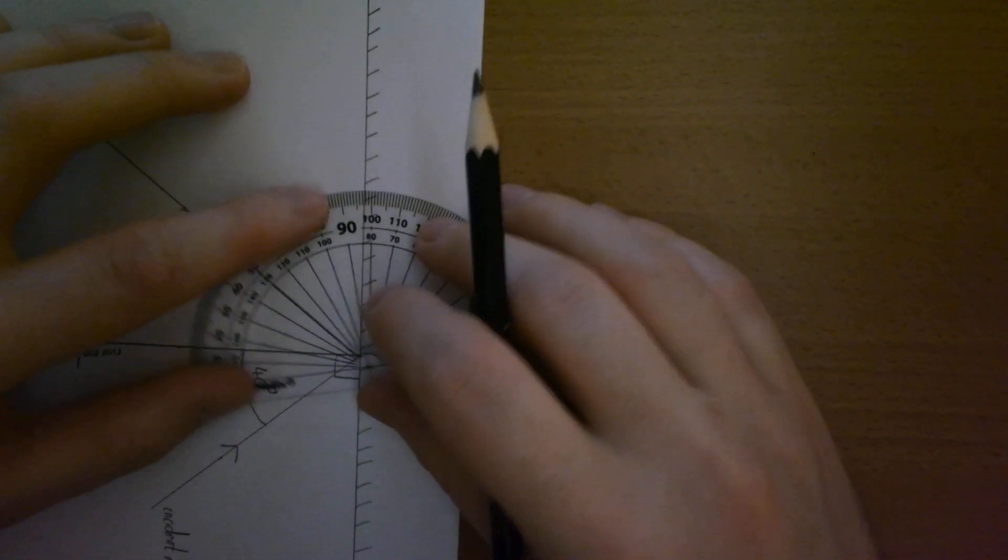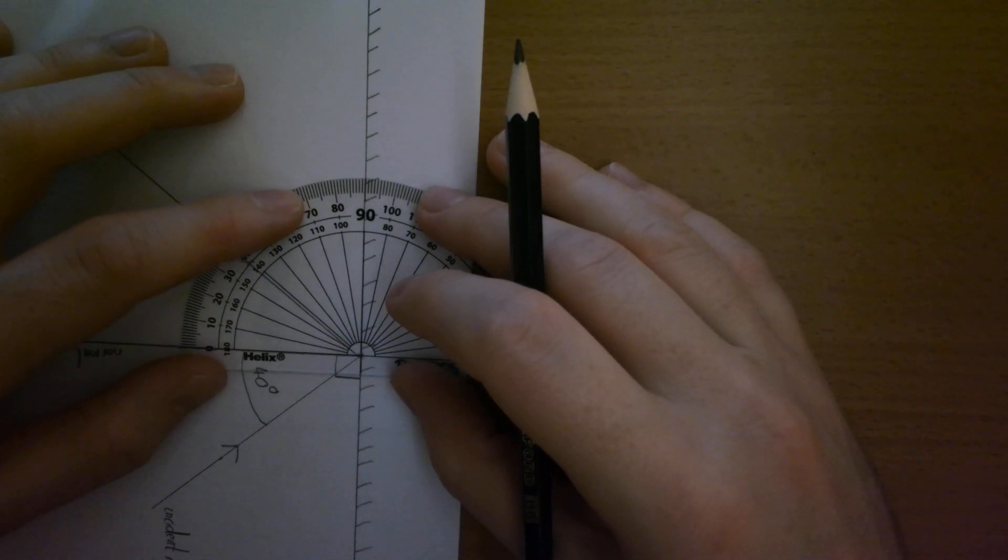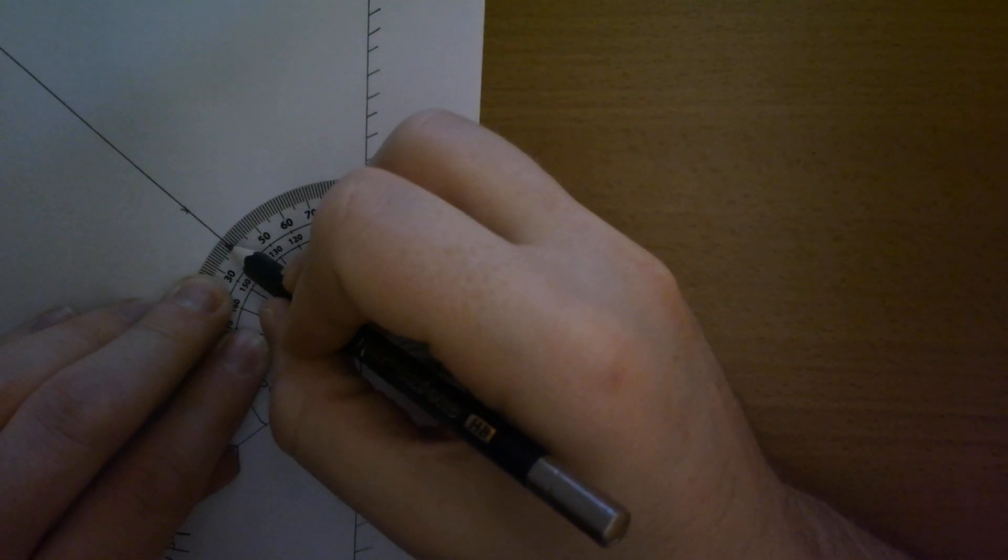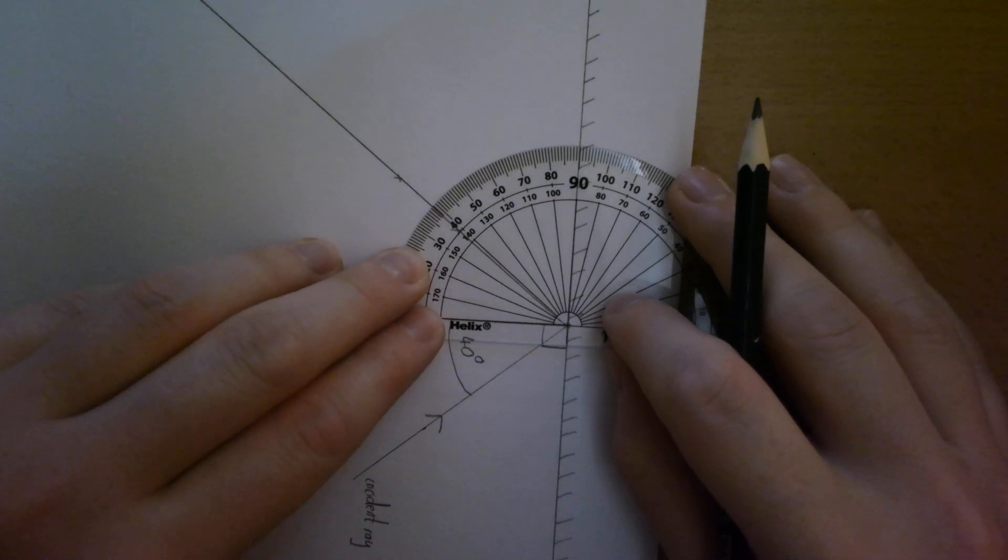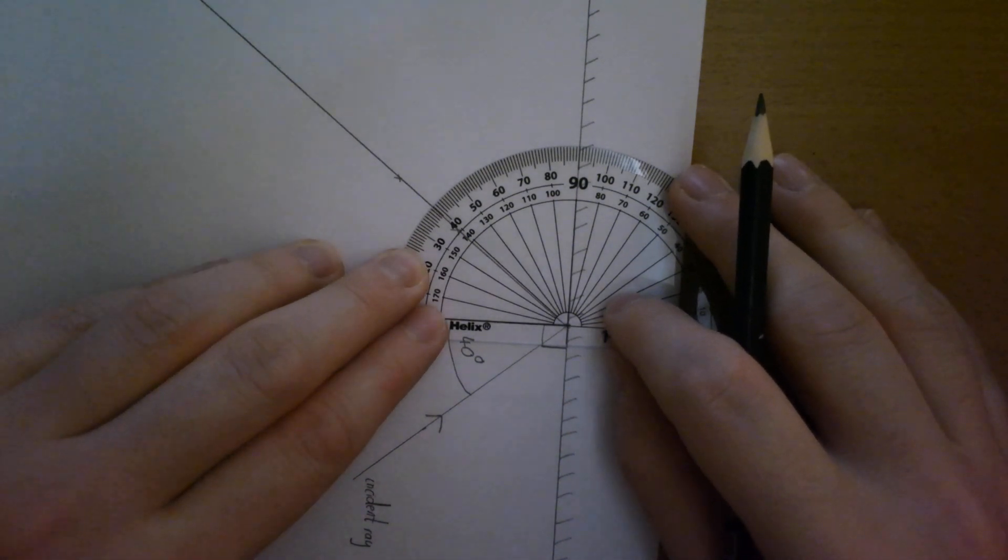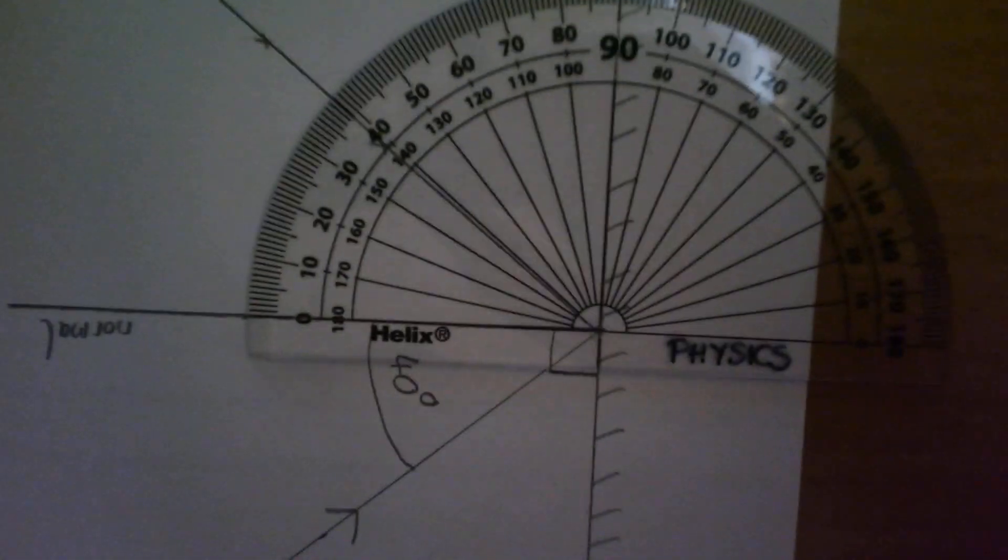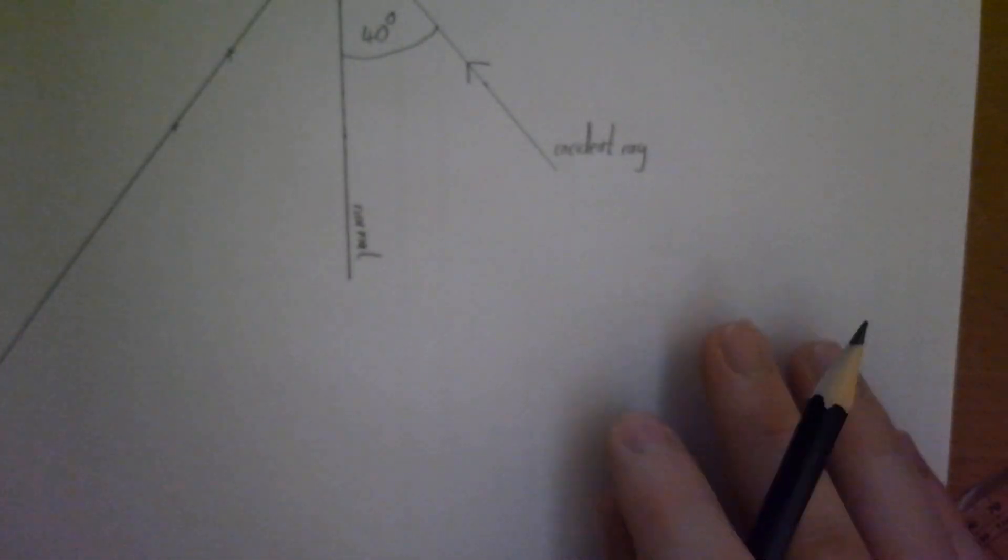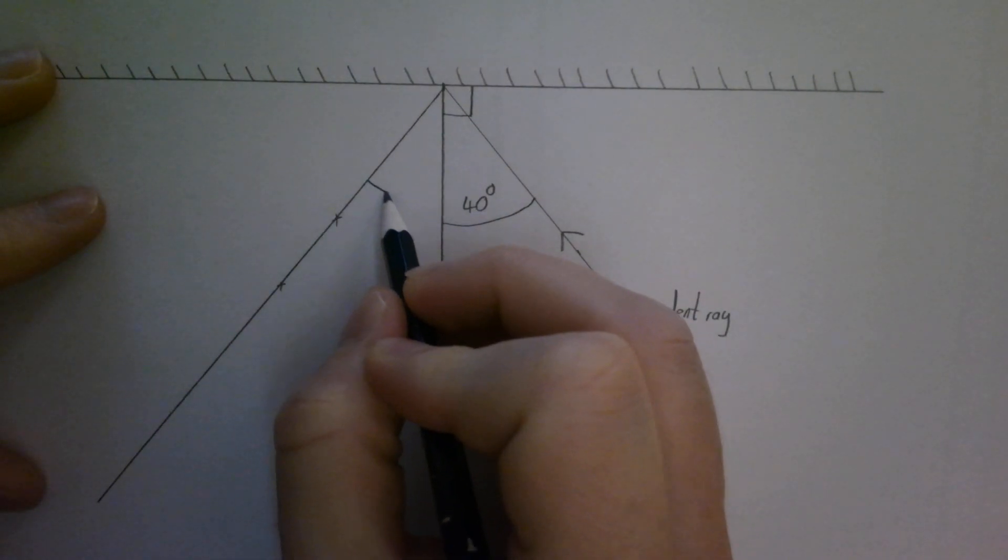I can use my protractor to measure the incident angle. I can see there that is not quite 40. If you look carefully, it's coming out there at 39 degrees. If I zoom in on that carefully, it's coming out there at 39 degrees.